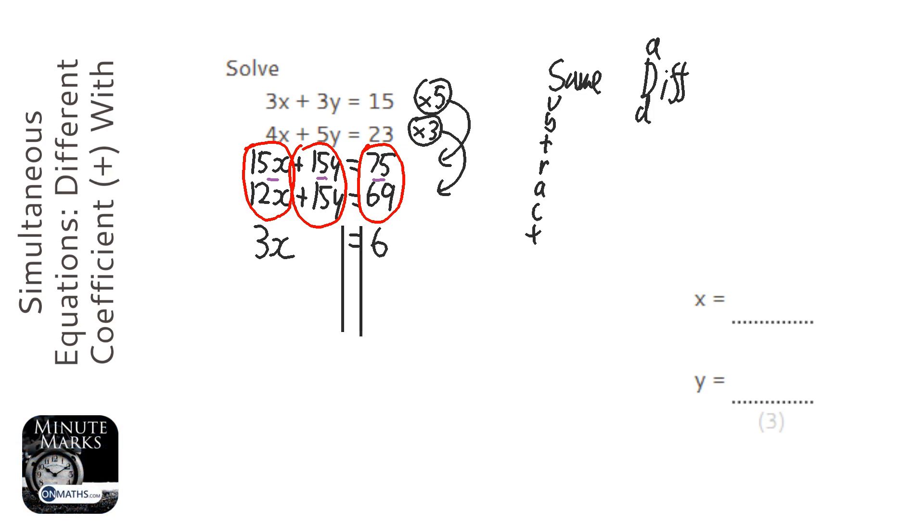So we're going to put our lines in and we're going to divide both sides by 3, and you get x equals 2.